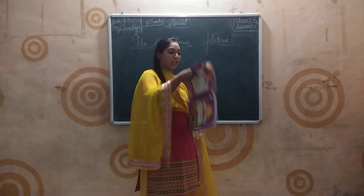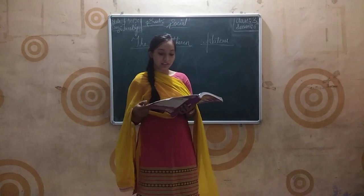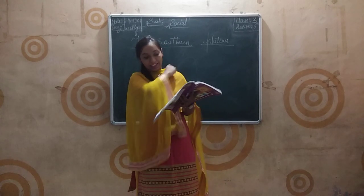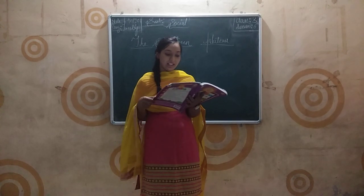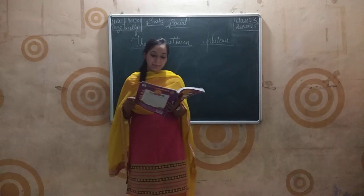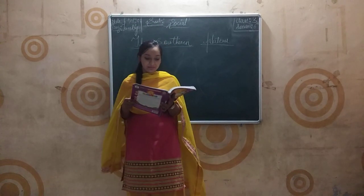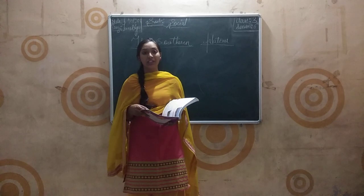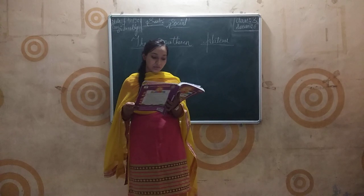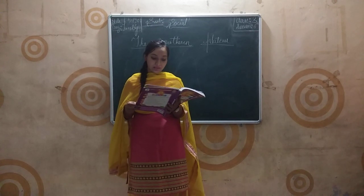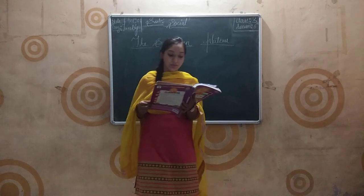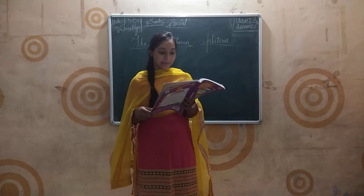The surface of the southern plateau is very rough, and the southern plateau occupies the largest part of India. It is surrounded by the western and eastern parts. These southern plateaus are surrounded by the western and eastern parts, and it extends to Kanyakumari, the southernmost tip of India.